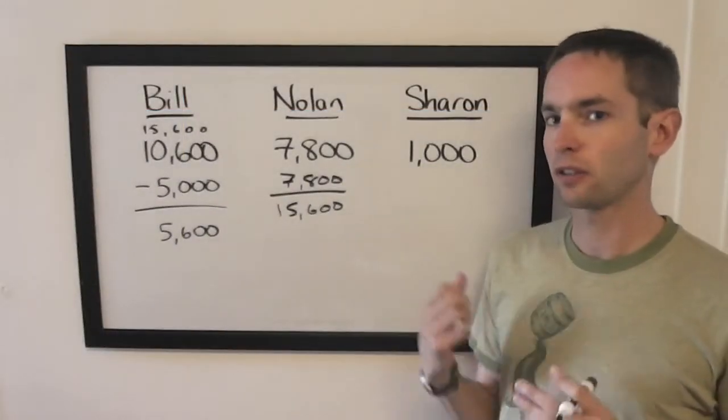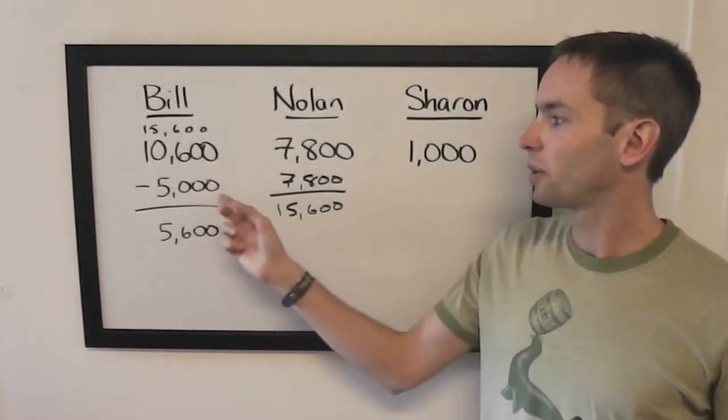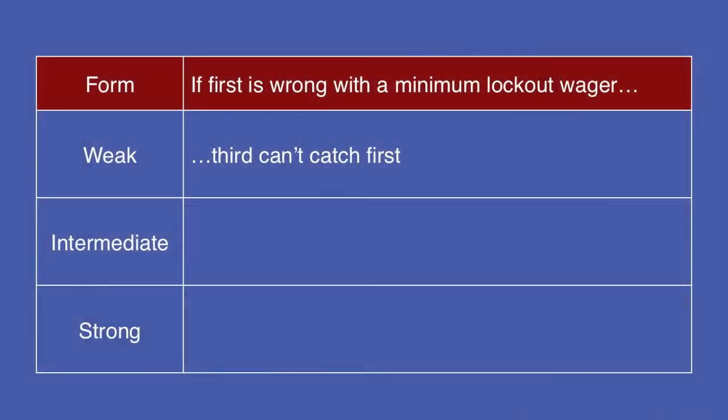This is an example of a weak scenario, third place can't catch up to Bill. Bill wagers to lock out Nolan, he'll wager 5,000, so if he gets it wrong, he'll have 5,600. Sharon can have at most 2,000, she's eliminated.